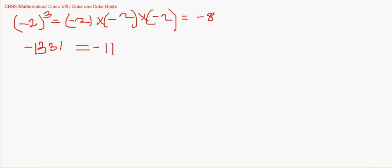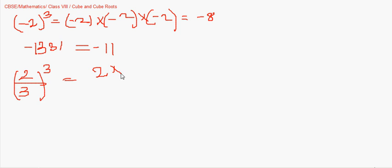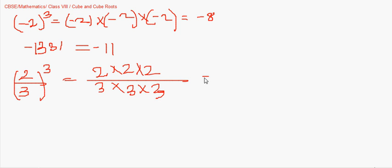For rational numbers: to find the cube of 2/3, we write (2/3)³ = (2 × 2 × 2) / (3 × 3 × 3) = 8/27. Conversely, to find the cube root of a fraction like 8/27, we find the cube root of the numerator and denominator separately.